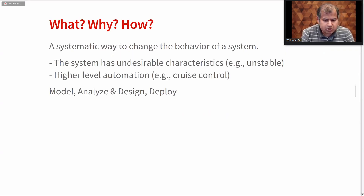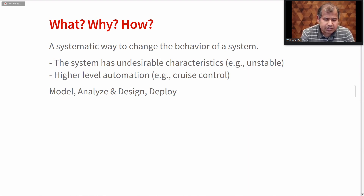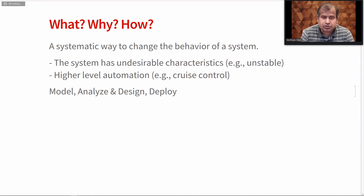Let me start by going over what a control system is, why we need one, and how to obtain a controller. You can think of control systems as a systematic way to change the behavior of a system. Why would we need to change the behavior? The system could have undesirable characteristics — for example, it could be unstable, or the response could be sluggish, or it could be oscillatory. Another main reason is that we would like to achieve a higher level of automation.